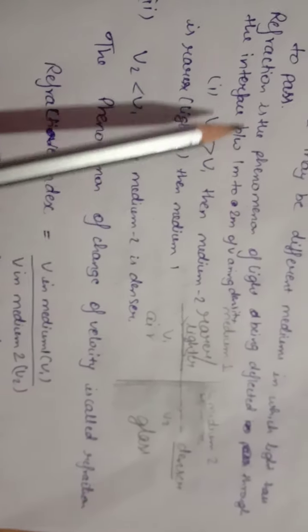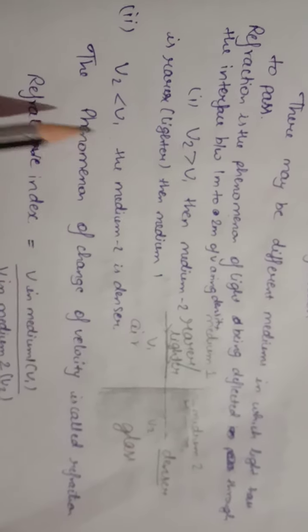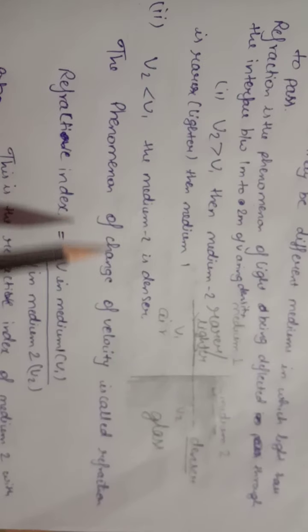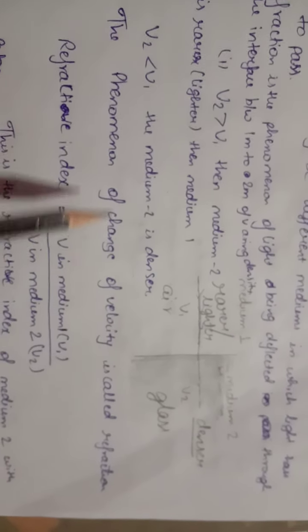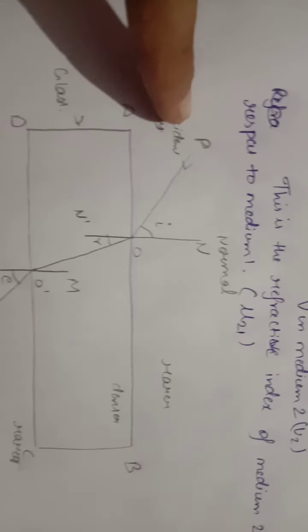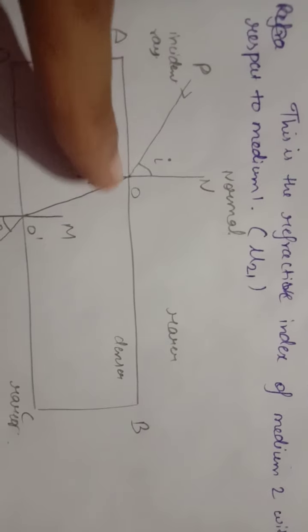So refraction is the phenomenon of change of velocity of light, the phenomenon of change of direction, the phenomenon of bending of light. Now we have to see what is the case. When light is normally incident on the surface, refraction is not the case. But when it is at an angle, incident at the interface between mediums, that is when refraction occurs.